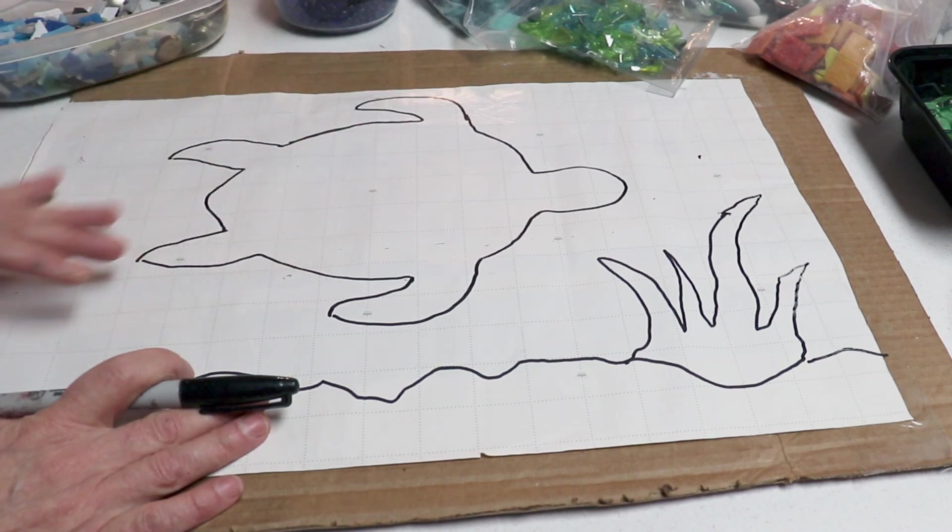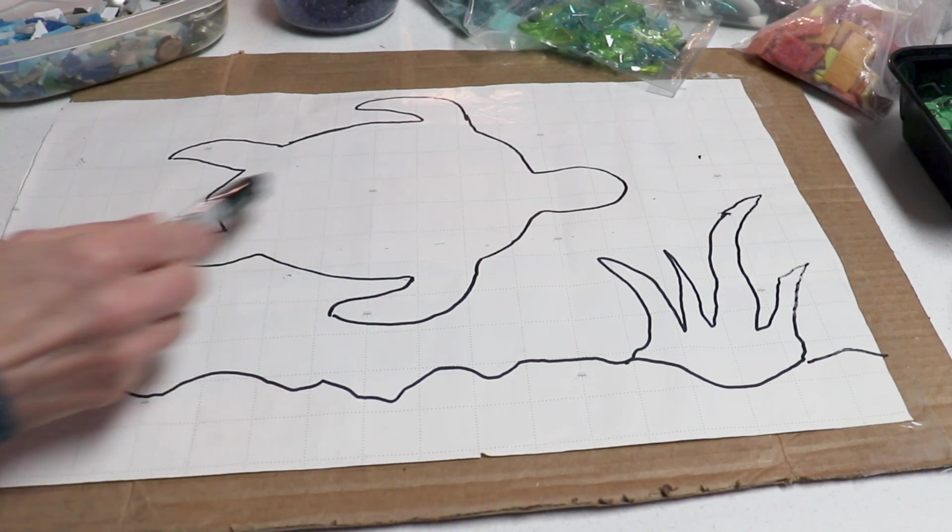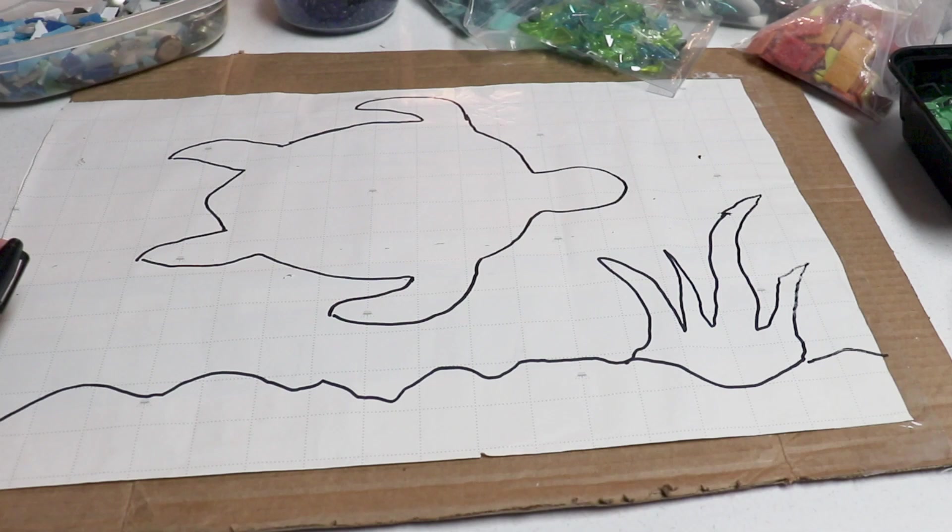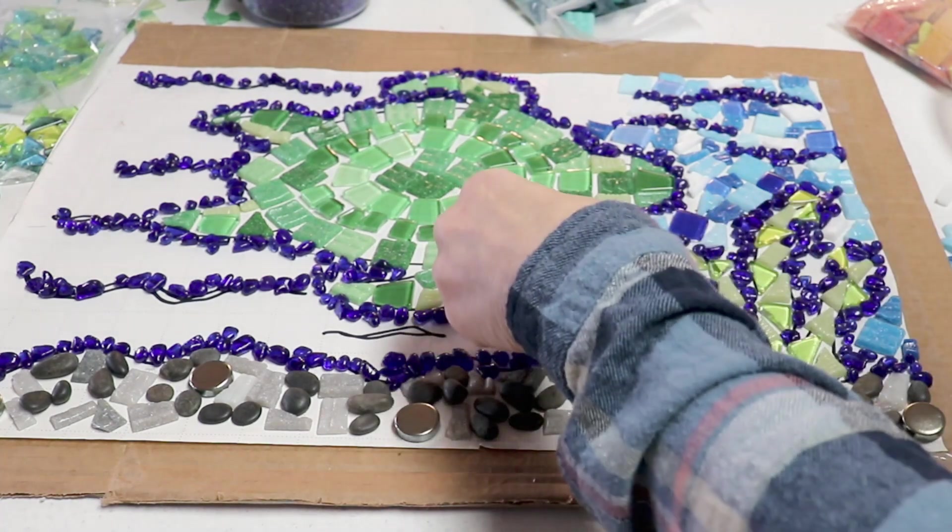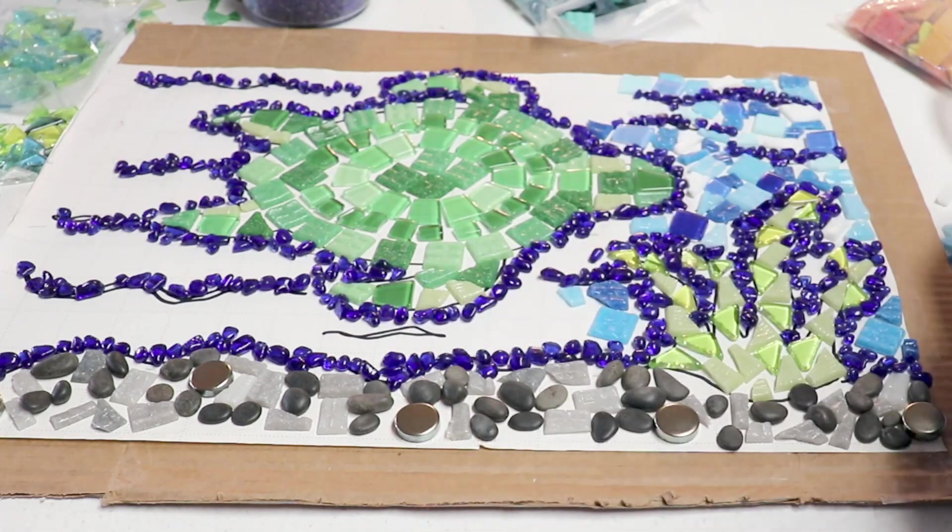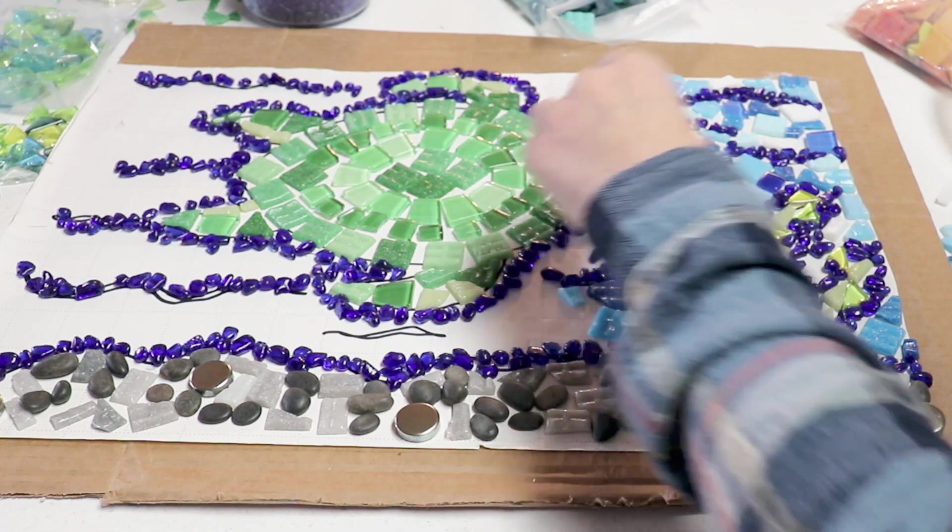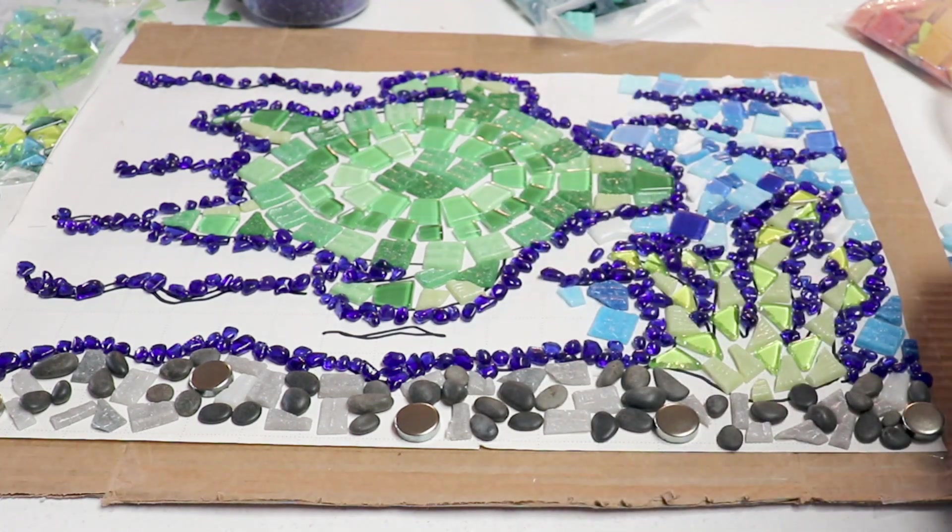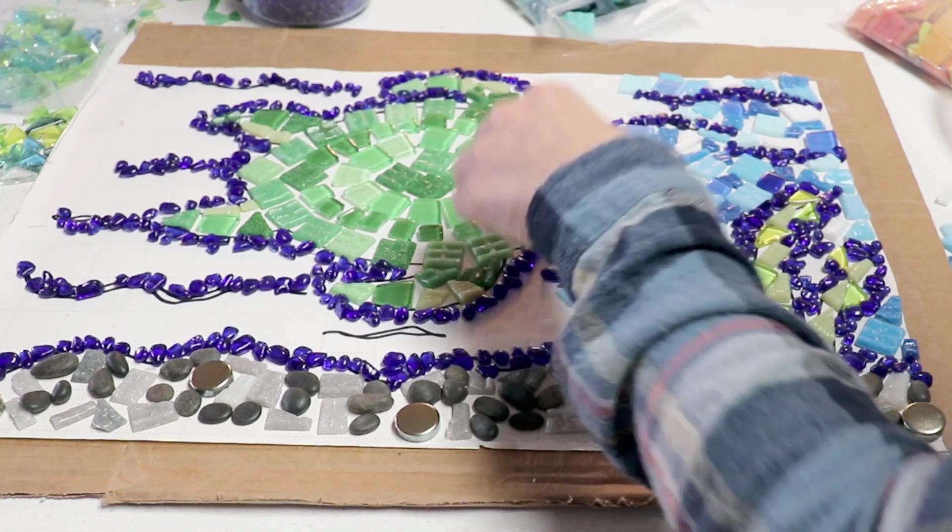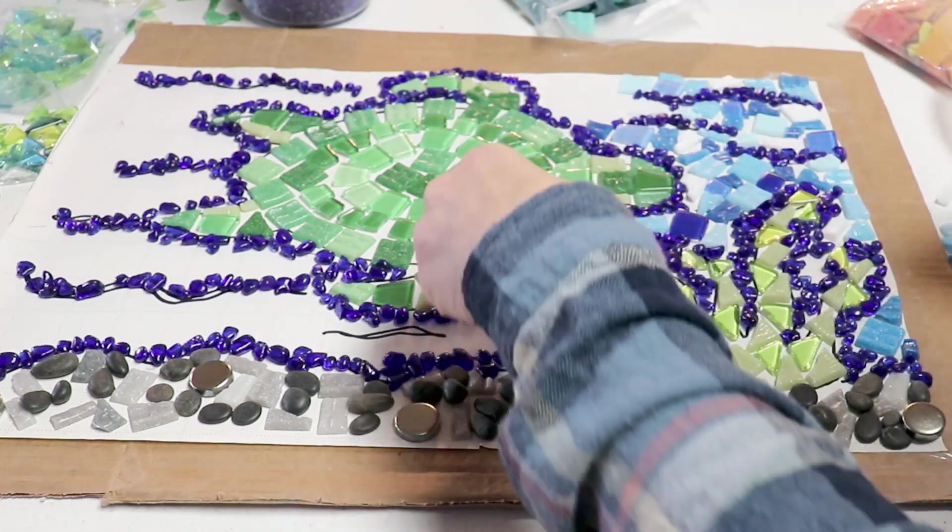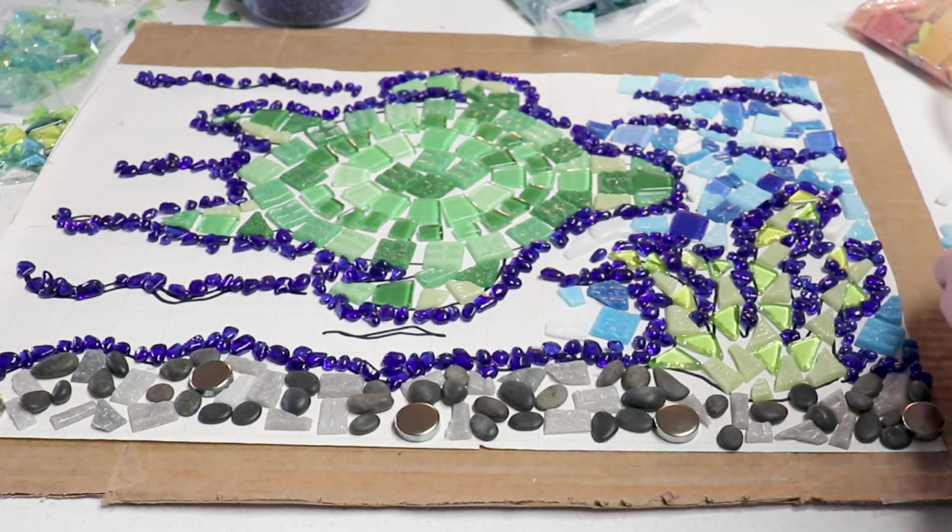You can also stick with something abstract or find patterns in books available at your local library. Contrasting colors, sizes and shapes of tiles can help to articulate and clarify elements in your design. You can see that I outlined my turtle with bright blue glass pieces to make it stand out. Remember any place that there isn't tile there'll be grout, so think about what color of grout will work best with your picture and use those grout lines to accentuate your design too.